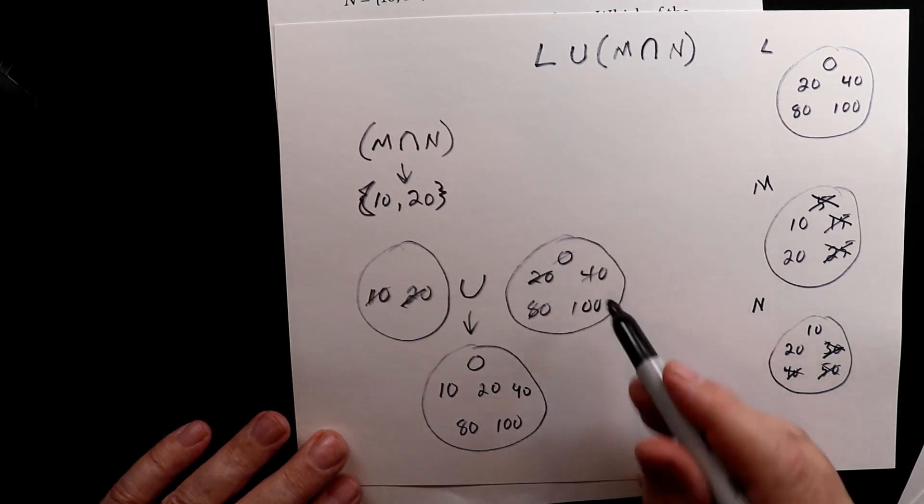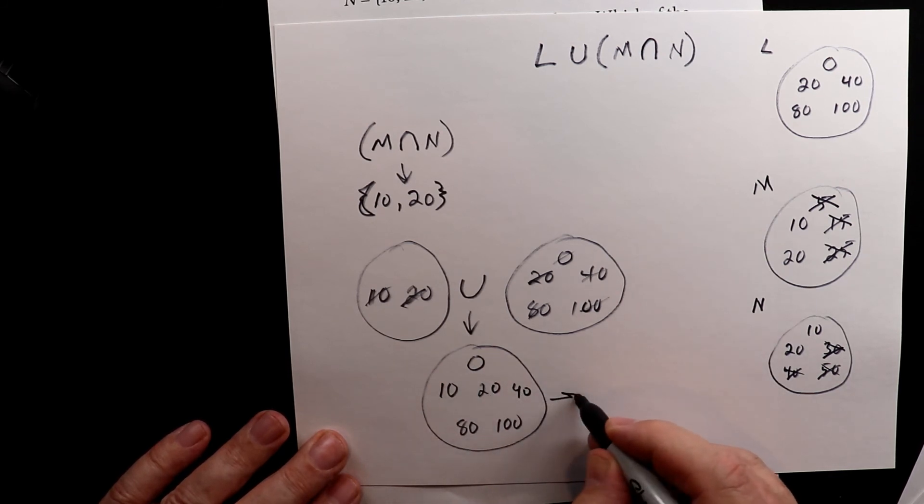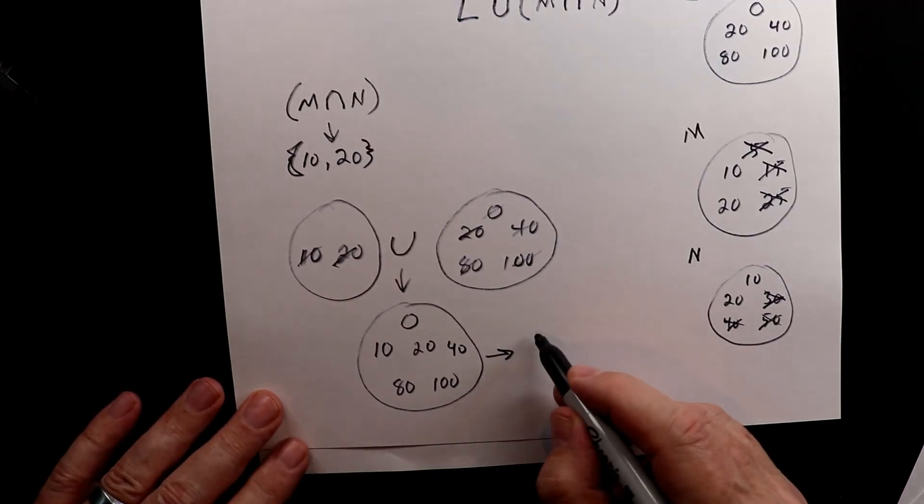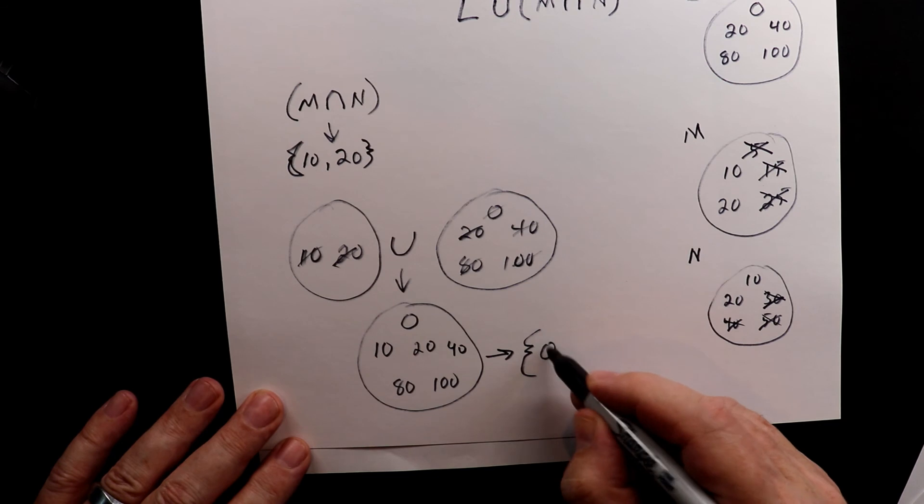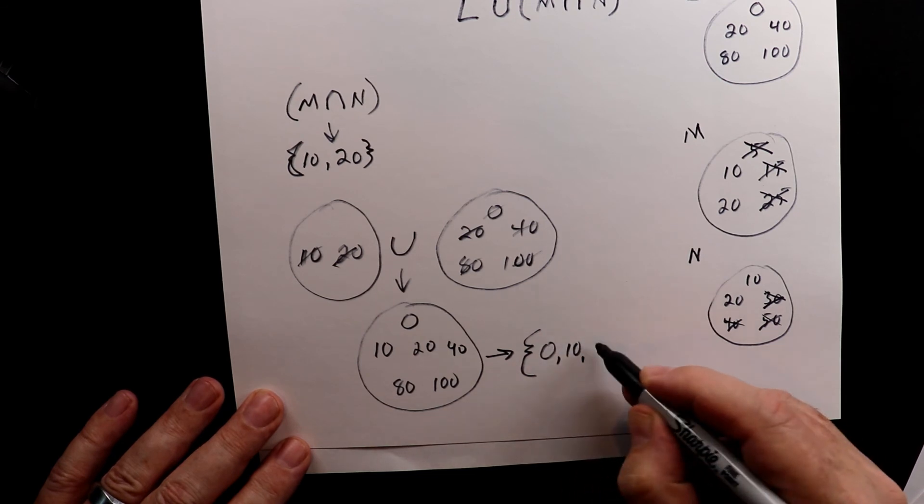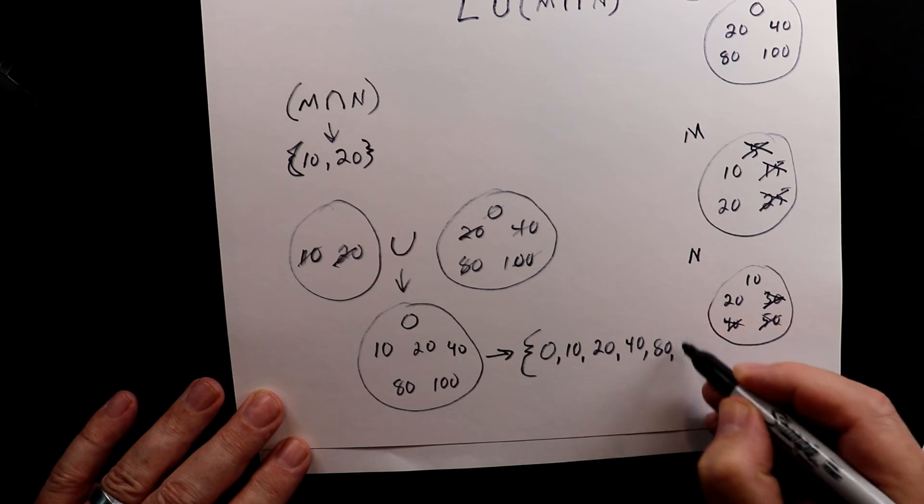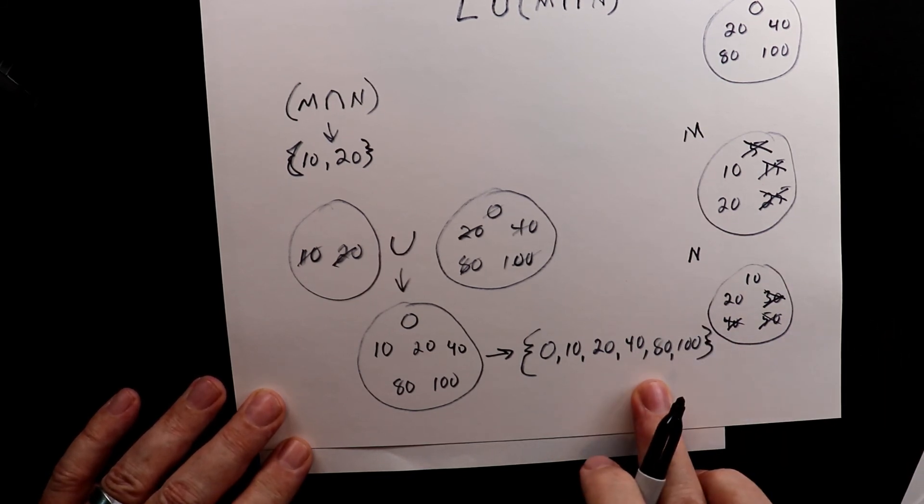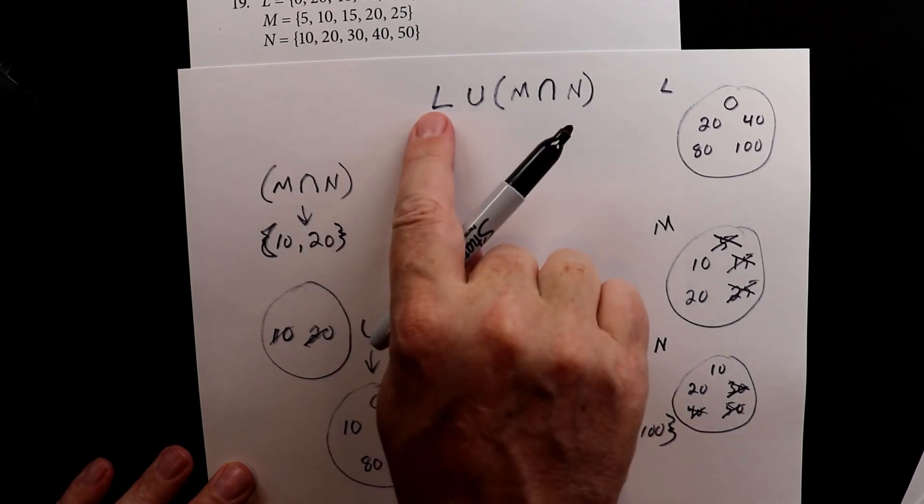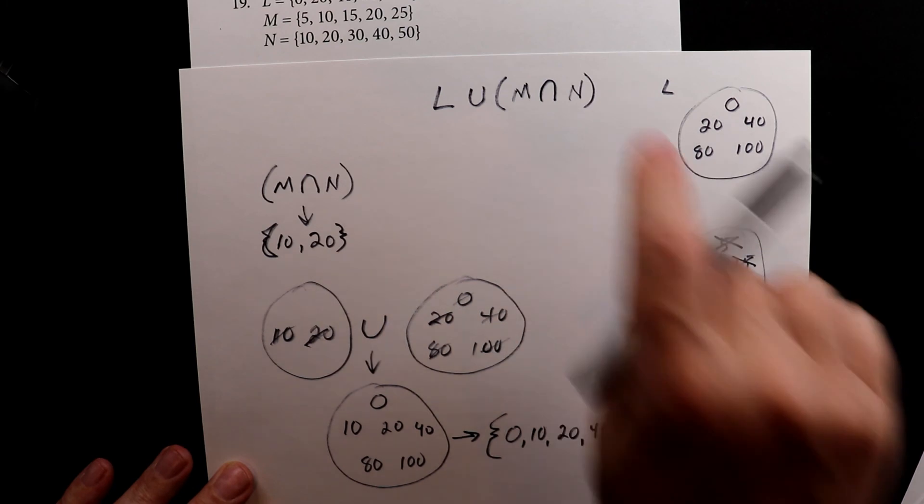So the union of these two sets is 0, 10, 20, 40, 80, and 100.